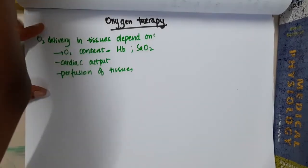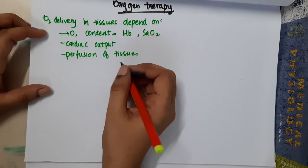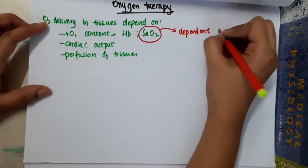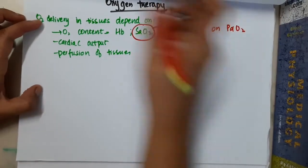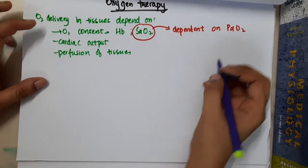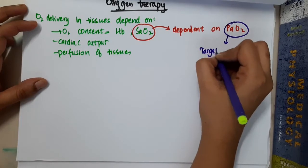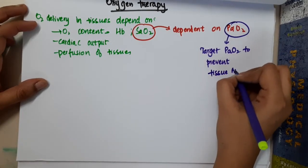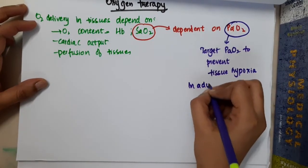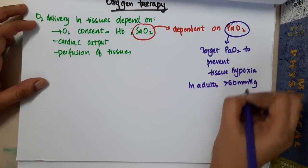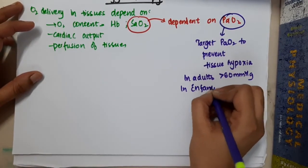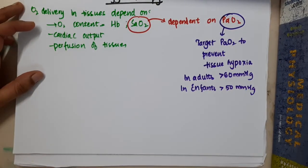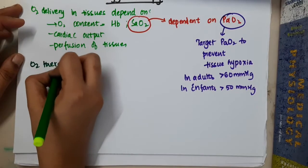Oxygen saturation depends on partial pressure of oxygen. The target partial pressure of oxygen to prevent tissue hypoxia is, in adults, more than 60 mmHg and in infants it is more than 50 mmHg.